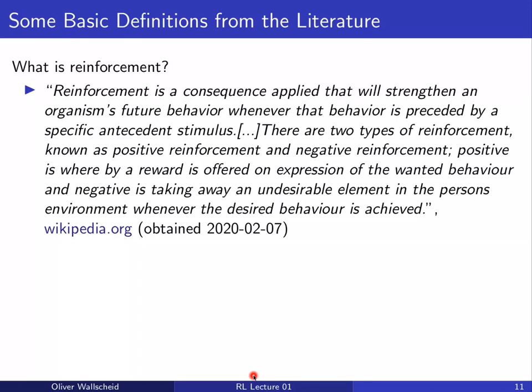Reinforcement learning basically consists of two expressions: reinforcement and learning. From Wikipedia, reinforcement is 'a consequence applied that will strengthen an organism's future behavior whenever that behavior is preceded by a specific antecedent stimulus.' There are two types: positive reinforcement, where a reward is offered for desired behavior, and negative reinforcement, where an undesirable element is removed when desired behavior is achieved.